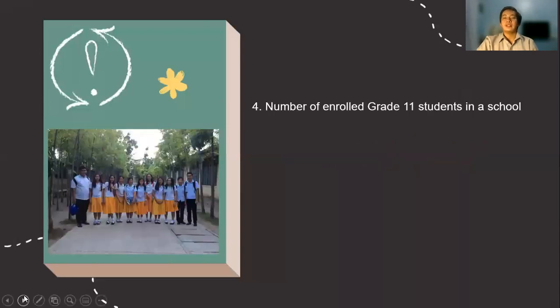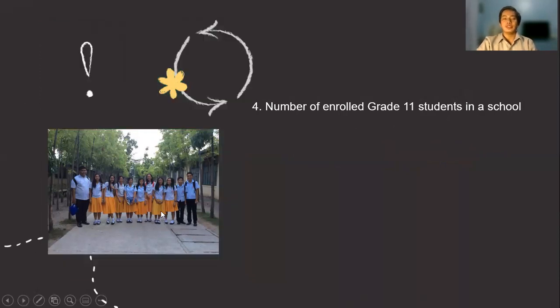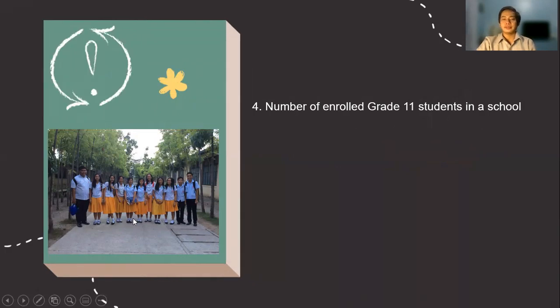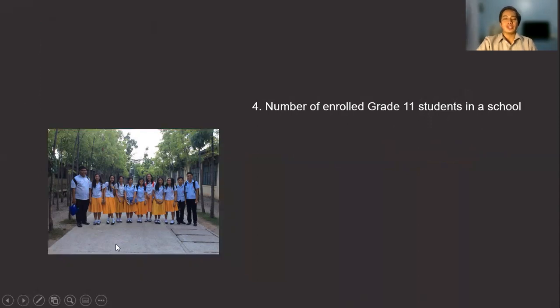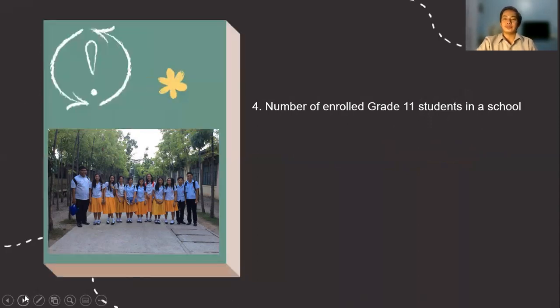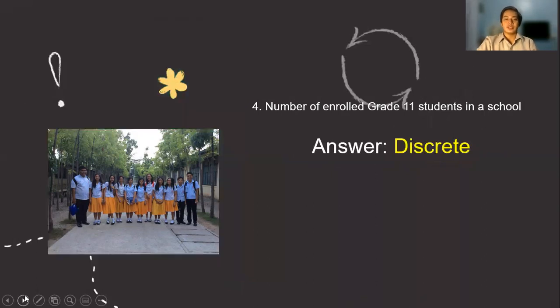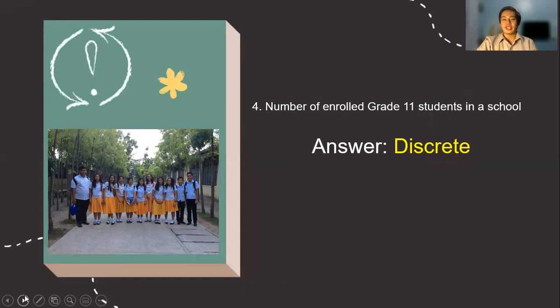Number four, the number of enrolled grade 11 students in a school. So did you miss this picture? Do you miss this school already? So how do we represent students in a school? Very good. The correct answer is discrete because there's no such thing as a 11.5 student. So there's no student which is fractional in form. So that is a whole number which is discrete.